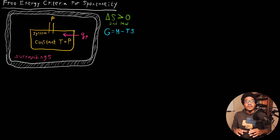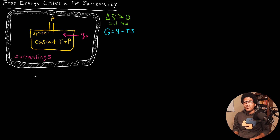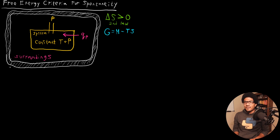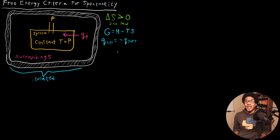Since we know that the Gibbs free energy can be defined in terms that only refer to the system, it would be very powerful if we can say whether a process is spontaneous or not using the Gibbs free energy as our thermodynamic potential. Let's address our usual thermodynamic system: some system — for example a chemical reaction — in a large water bath that is isolated. For an isolated system, Q for our system is equal to negative Q for the surroundings, reflecting the interplay of heat transfer. And this system will be at constant temperature and pressure.